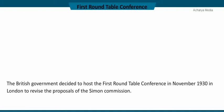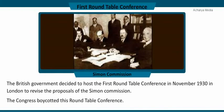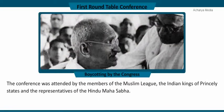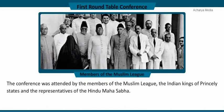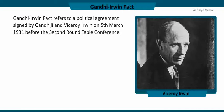Rajagopalachari broke the salt laws at Vedaranyam. The British government decided to host the First Roundtable Conference in November 1930 in London to revise the proposals of the Simon Commission. The Congress was already boycotting all government-arranged meetings and conferences and therefore boycotted this Roundtable Conference too. However, this conference was attended by the members of the Muslim League, the Indian kings of princely states, and the representatives of the Hindu Mahasabha. No decisions were made, as the British realized that without the participation of the Congress, they could not make any constitutional changes in India.